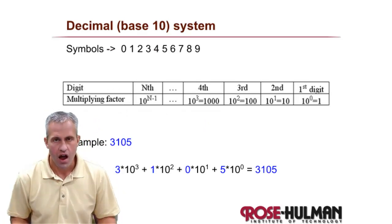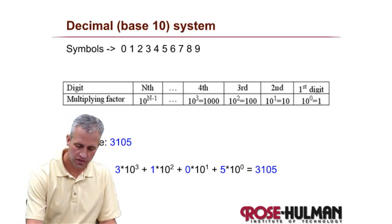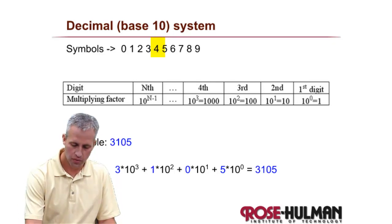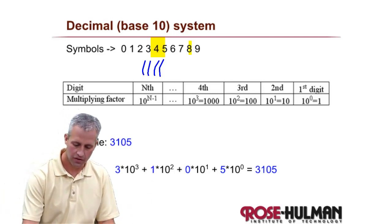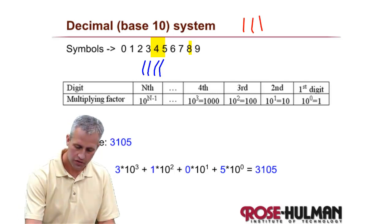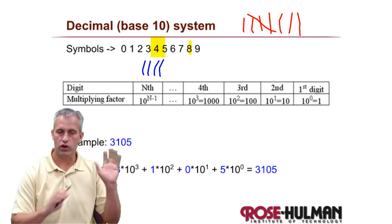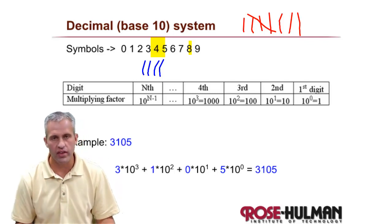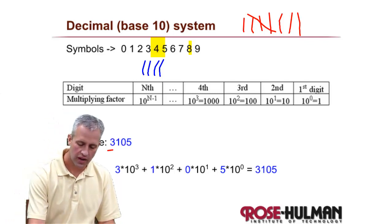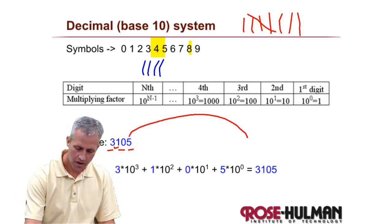Let's start by talking about the number system you know best. A number system consists of symbols. Take this symbol here — you know it as the number four; it represents a quantity of that many. Another symbol, like eight, represents that many. Someone picked these symbols a long time ago to represent quantities. The other key thing about a number system is that each location determines a multiplying factor.